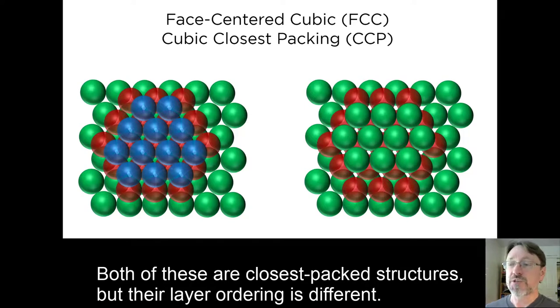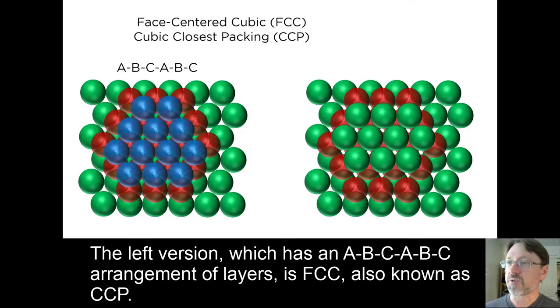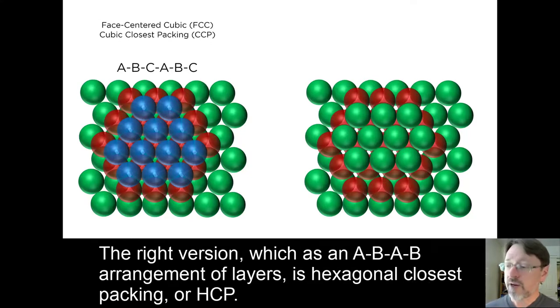Both of these are closest packed structures, but their layer ordering is different. The left version, which has an ABC ABC arrangement of layers, is FCC, also known as CCP. The right version, which is an AB AB arrangement of layers, is hexagonal closest packing, or HCP.